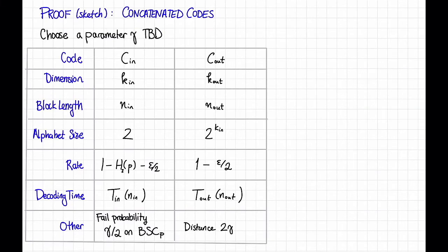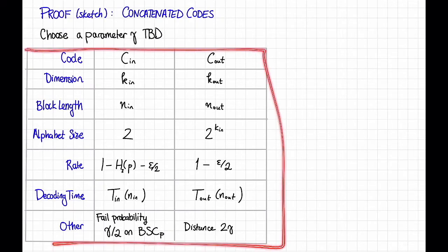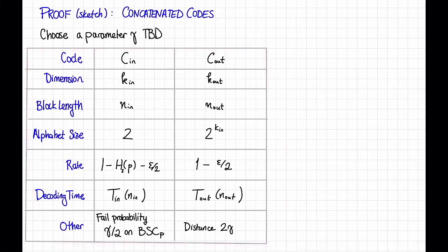To prove this theorem, we're going to use our old friend concatenated codes. Now, there are going to be a lot of parameters, so I've made a big table to keep track of them all. First, let's choose a parameter gamma to be determined.